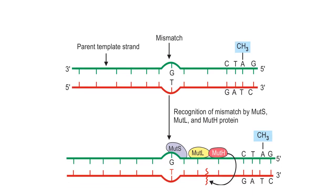Now we will see mismatch repair in detail. The first step in mismatch repair is the addition of a methyl group to the template or old strand by dam methylase enzyme. This dam methylase enzyme methylates DNA at the N6 position of all adenine residues occurring within the 5' GATC sequence.